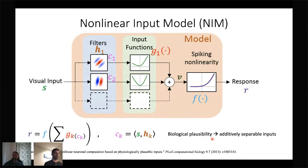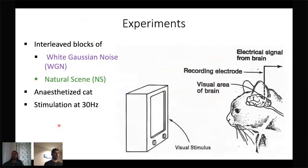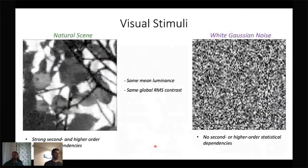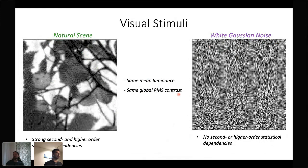The aim of our study was to see how characterization of V1 cells using this model changes as the visual input changes between natural scenes and white Gaussian noise. We recorded from cat primary visual cortex using multielectrode linear probes while presenting interleaved blocks of white Gaussian noise and natural scenes. These two stimulus types were matched in mean luminance and global RMS contrast, but the main difference was in second and higher order statistical dependencies, which are very strong in natural scenes but don't exist in white noise.